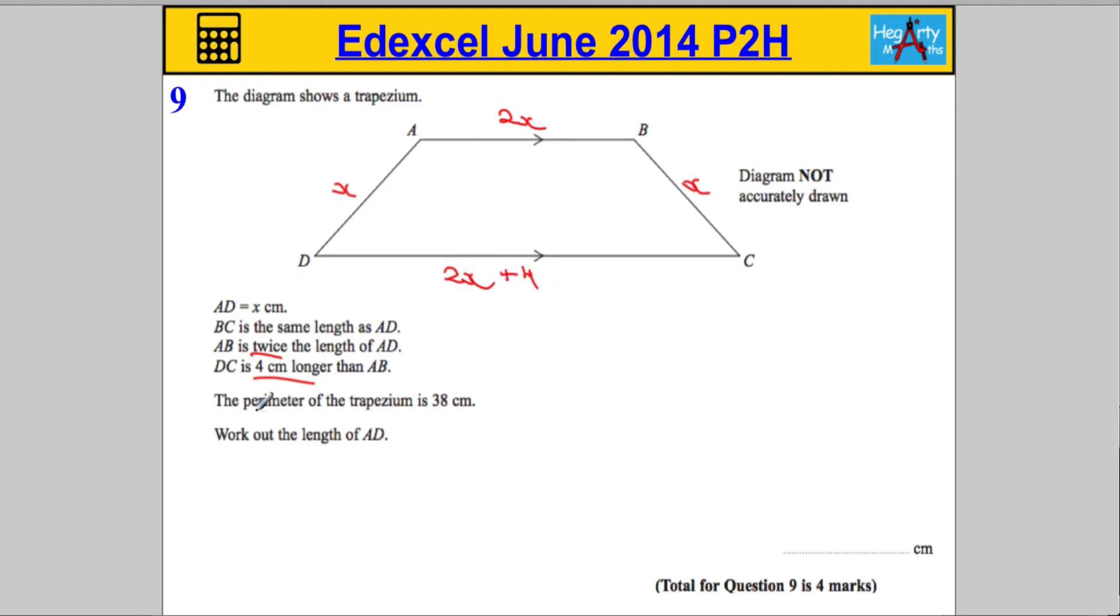Now the next bit of information we're given is that the perimeter of the trapezium is 38. So that's telling me that if I add up all the sides, the perimeter is the distance around the whole shape. If I add up all the sides, the answer will be 38. We're asked to find the length of AD.